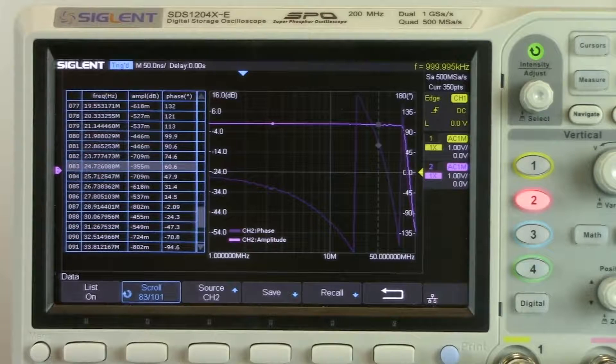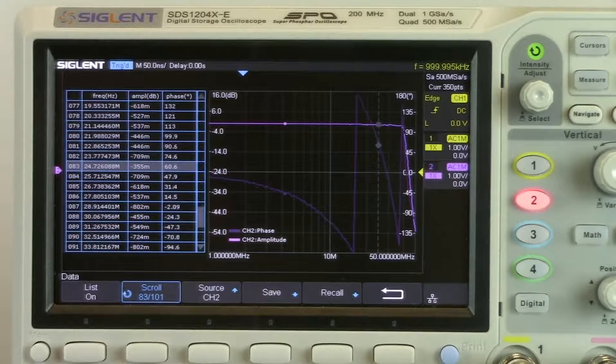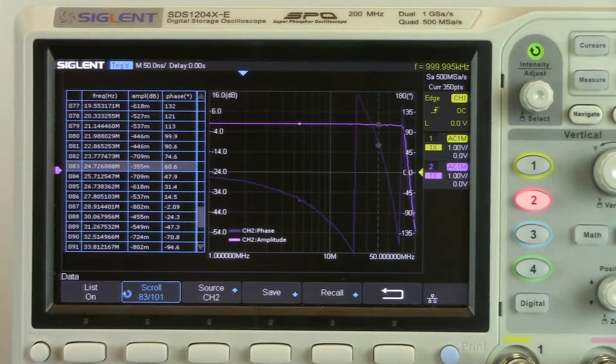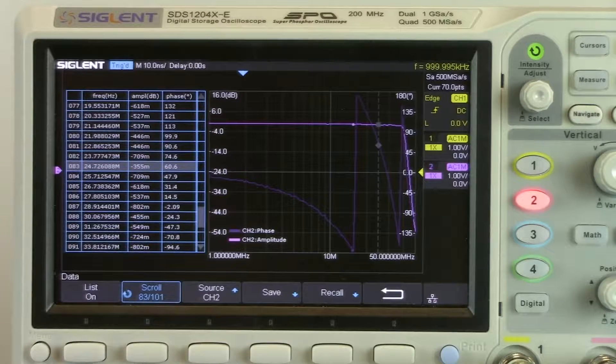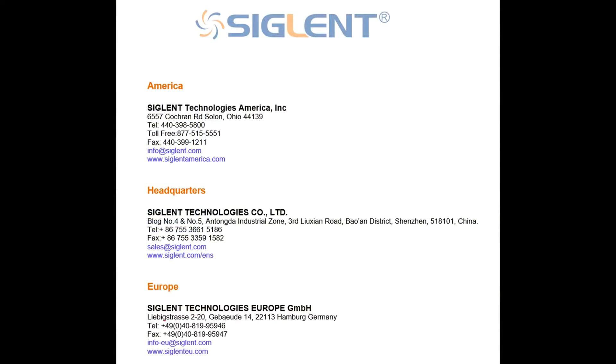So I hope that this has been a helpful video for you in learning how to easily perform Bode plot analysis using an XE oscilloscope, a 4-channel XE oscilloscope, and the SDG X series of arbitrary waveform generators. If you have any additional questions, please contact your local Siglent office. Thanks very much for watching the video and have a great day.